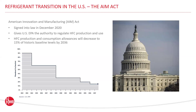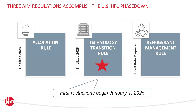The American Innovation and Manufacturing Act was signed into law in 2020 and authorizes the EPA to structure a 15-year phase-down of HFCs across a variety of applications. The AIM Act will drive production and consumption of HFCs to a mere 15% of historic baseline levels by 2036, aligning with the Kigali Amendment to the Montreal Protocol. The AIM Act directs EPA to address HFCs through: phasing down HFC production and consumption via an allowance allocation program, facilitating transitions to next-generation technologies, and maximizing reclamation while minimizing releases to the environment.